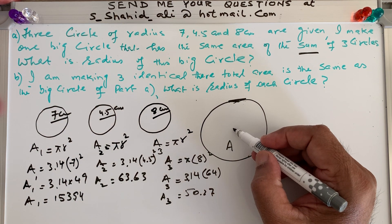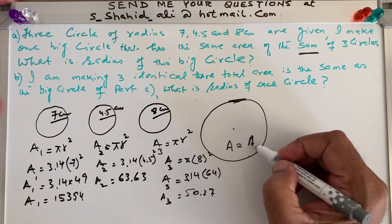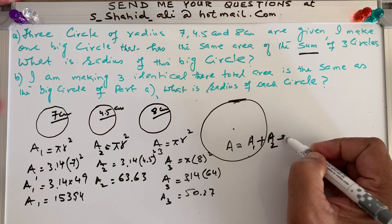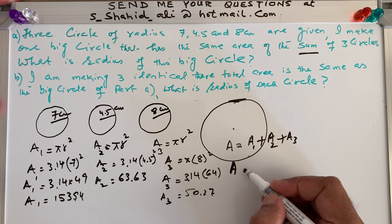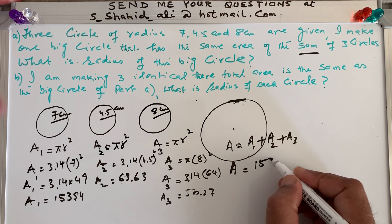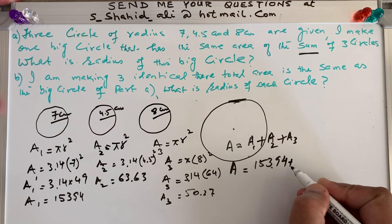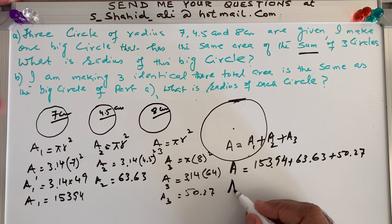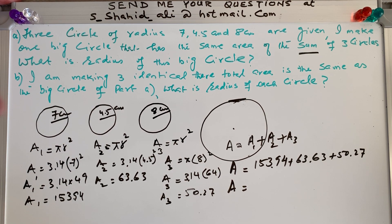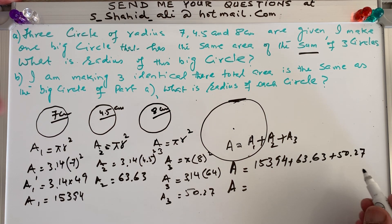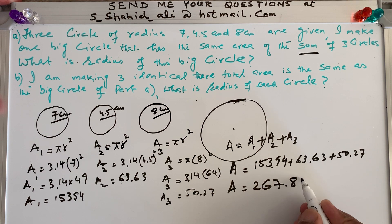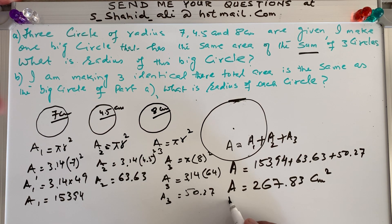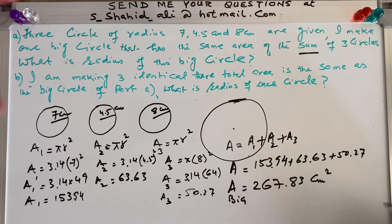The question says I draw a big circle whose area equals the sum of all three circles: A1 plus A2 plus A3. So that is 153.94 plus 63.63 plus 50.27, which gives the area of the big circle as 267.83 centimeters squared. This is the answer for part A — the area of the big circle.